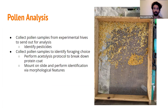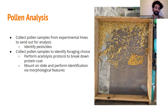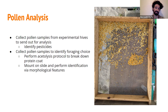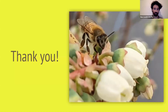We also do a bunch of pollen work. We collect pollen samples from experimental hives to send out for pesticide analysis — we send this to another lab. We also collect pollen samples to perform an acetolysis protocol that breaks down the strong protein coat that all pollen is coated in. We then mount pollen on slides and perform identification via morphological features. The process uses a lot of strong acids and bases — it can be fairly toxic — but the final product is individual pollen granules stained red, as you can see in the image on the right.